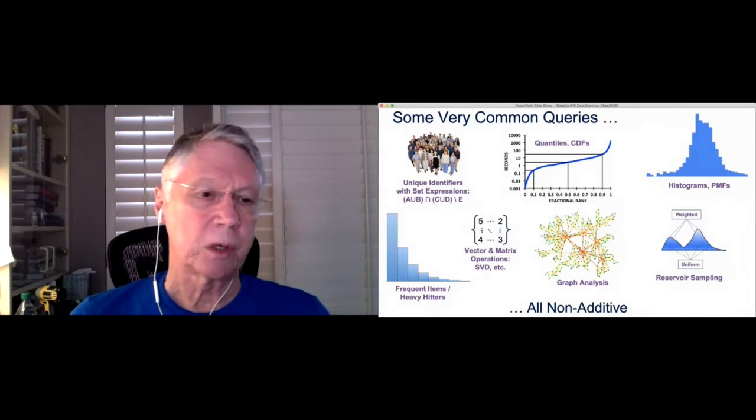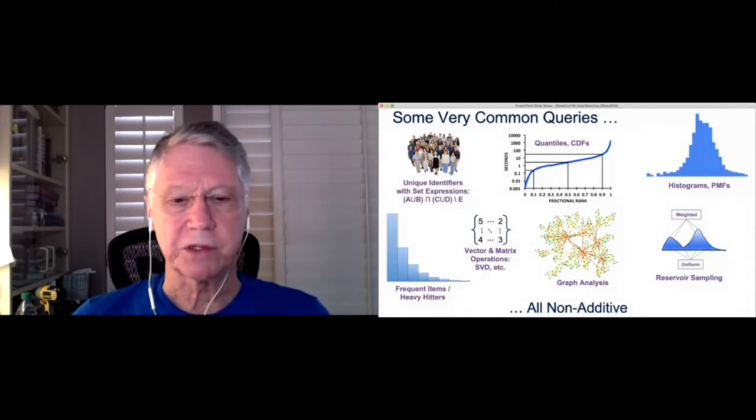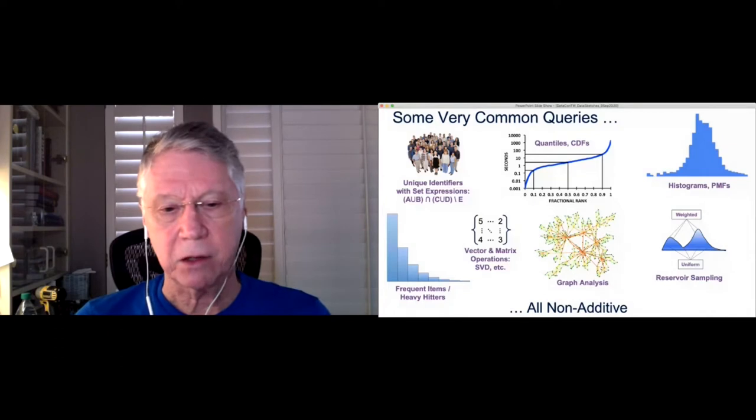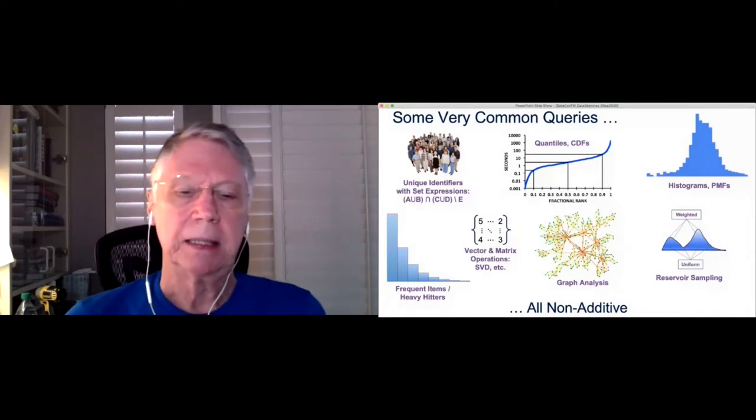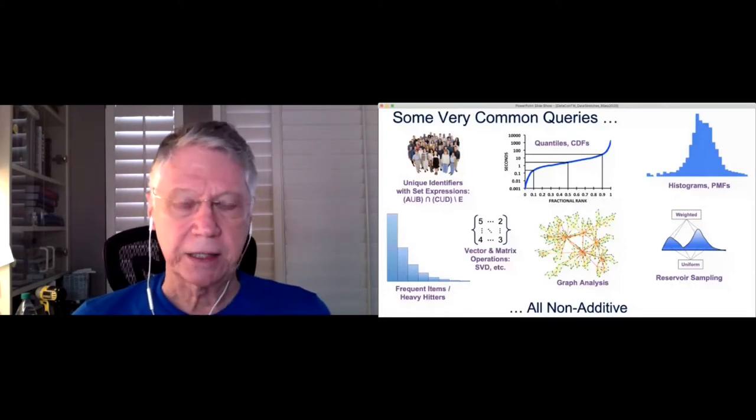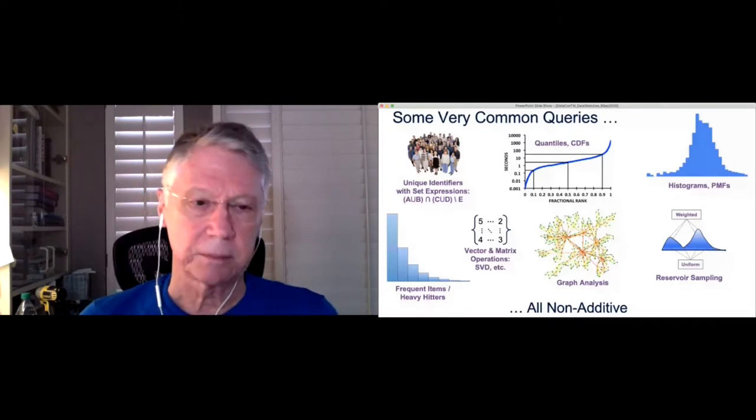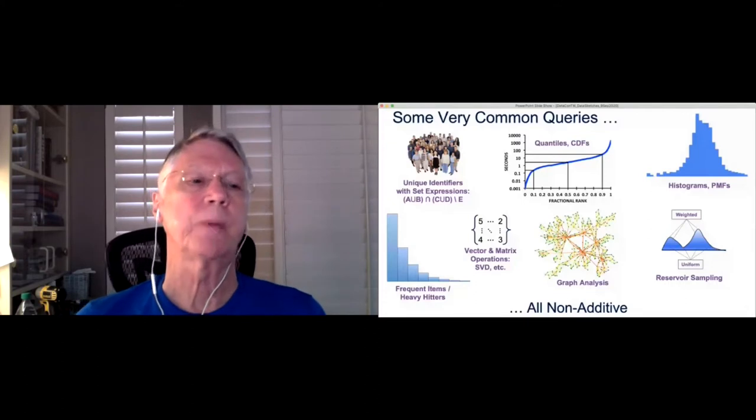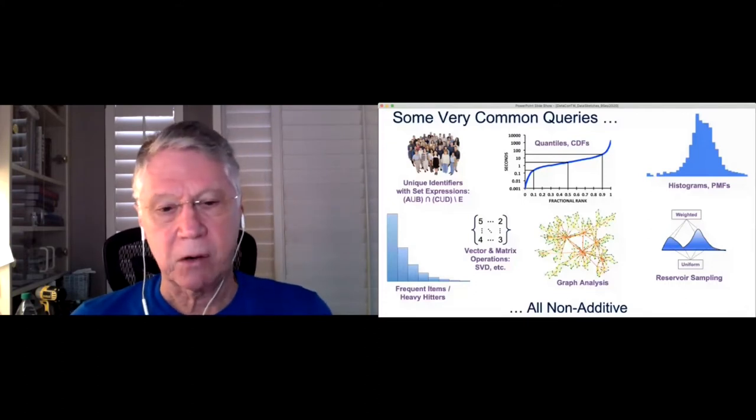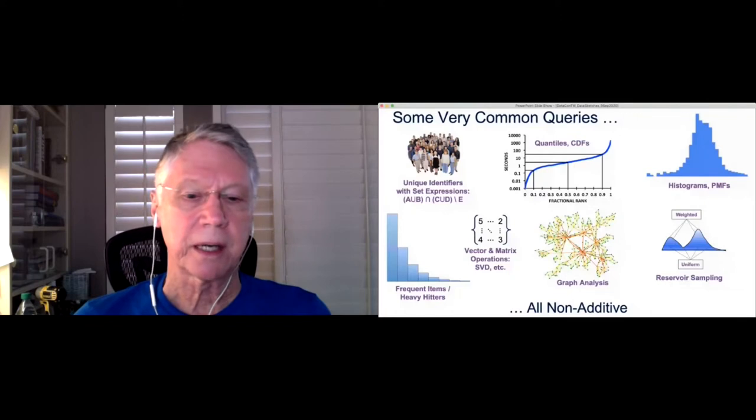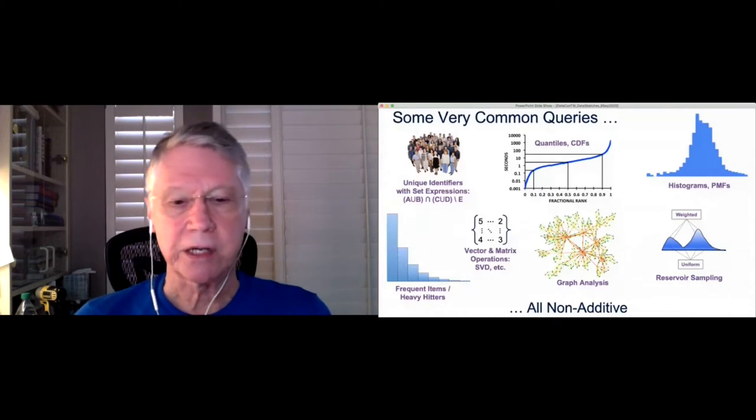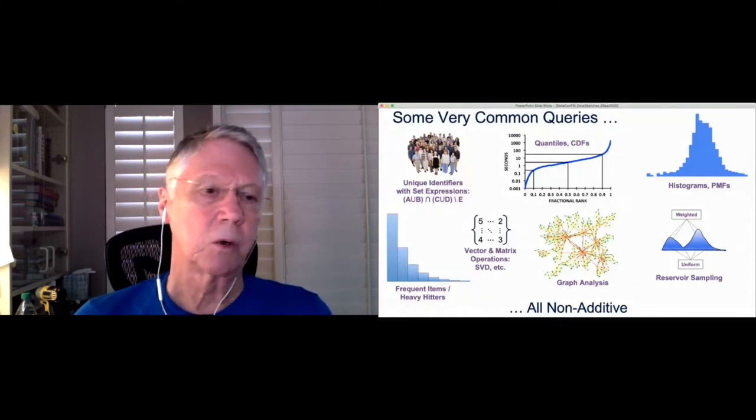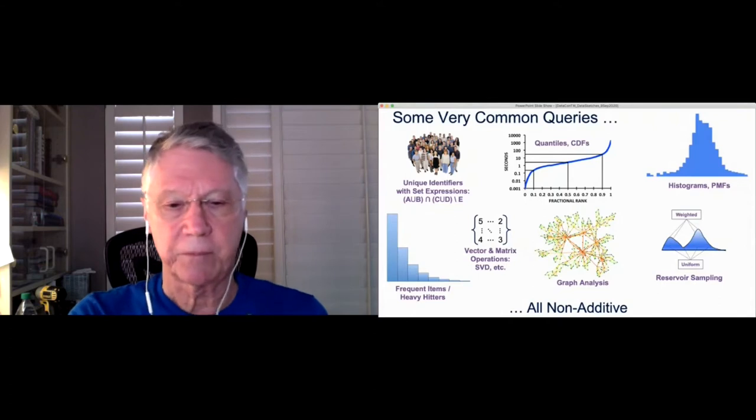And be able to compute that in real time or certainly as a stream. The next one on the lower left is frequent items. So we may have many occurrences of something, but we want to find out what is the most popular. If you are selling tunes on your website, you may want to say, okay, within the last hour, what are the most frequently occurring tunes that then you can adjust your advertising or adjust your priorities based on what's popular or most frequent for the moment?